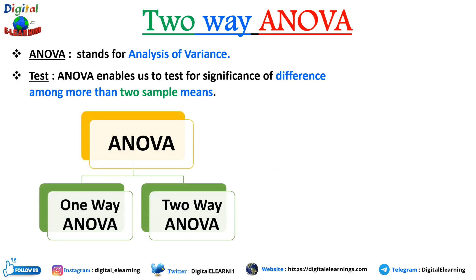ANOVA is basically of two types: one-way ANOVA and two-way ANOVA. The difference is that in one-way ANOVA there is only one factor or independent variable, while in two-way ANOVA there are more than one independent variable.